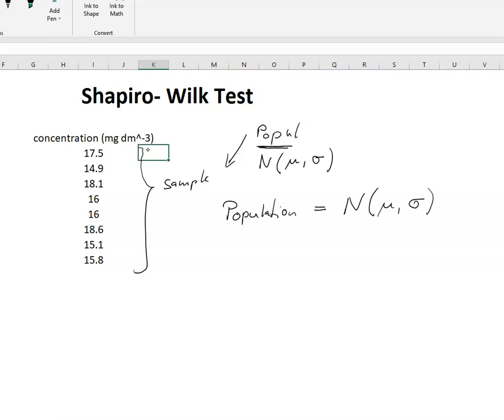And the important thing is the question: is this population from which we have taken the sample normally distributed? And normal distribution just as a reminder is this particular bell-shaped curve with a very complicated looking equation.